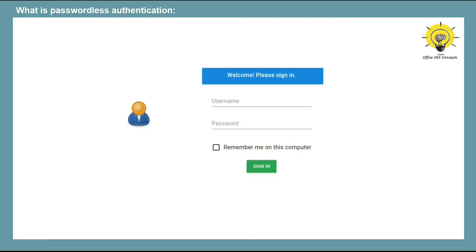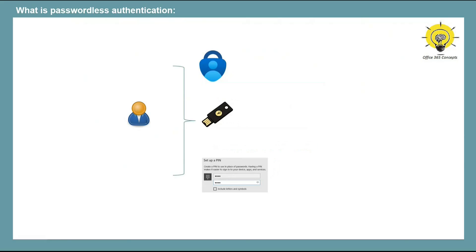Usually users use their username and password to log into an application. But passwordless authentication is a more convenient way to log in — it lets users log into an application without passwords. Instead of passwords, they can use either the Microsoft Authenticator app, a security key, or Windows PIN. When passwordless authentication is enabled, the user will not be required to enter a password.